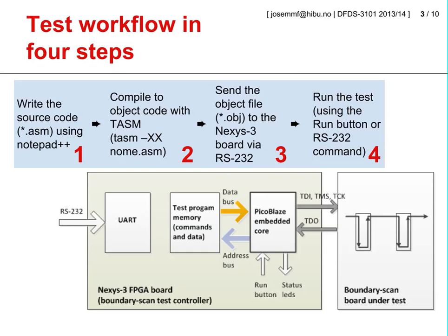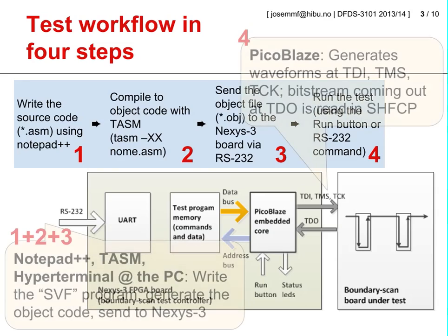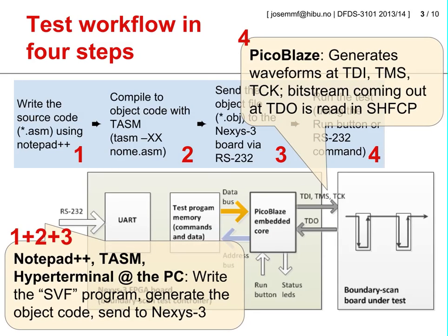The test workflow of our Boundary Scan Test Controller comprises four steps. The first three steps take place at the PC side. We start by using Notepad++ or any other text editor to write the source code using SVF-like test commands. Then at the PC side we use the TASM cross-assembler to compile the source code into object code to be sent to the Nexus 3 board. Finally, still at the PC side, we use the HyperTerminal utility to send the object code to the Nexus 3 board.